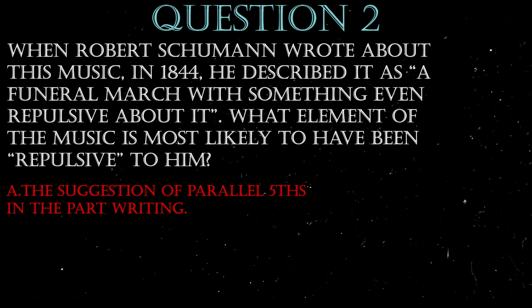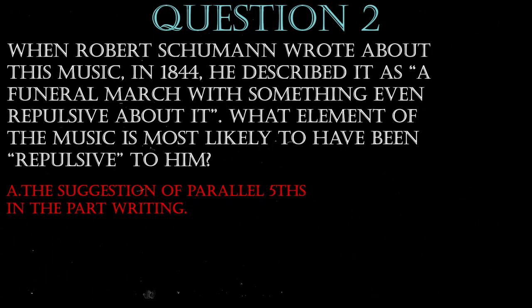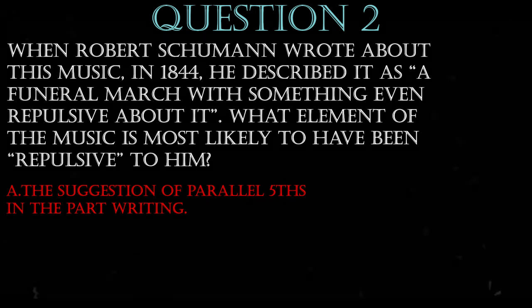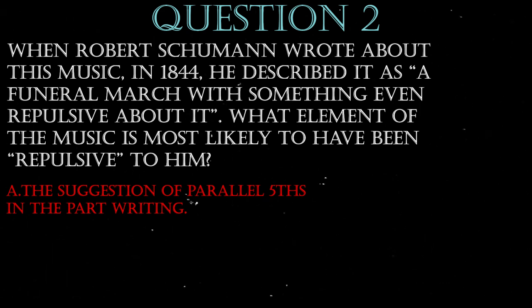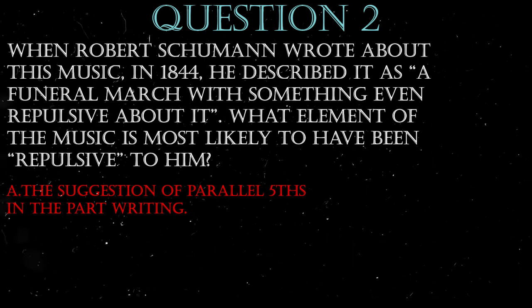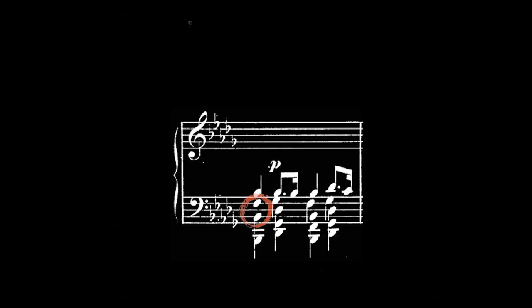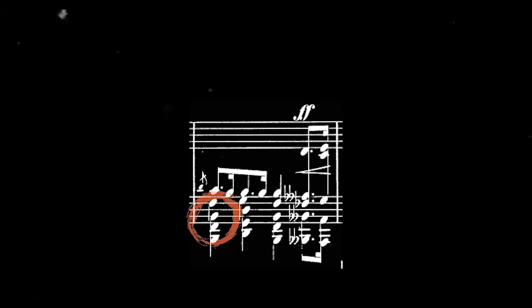The answer therefore is A. The element that Schumann found repulsive is probably the implied consecutive fifths in the harmony of each bar, just swinging back and forth. You can hear them as they move from B-flat five to G-flat first inversion, but there are these fifths moving around in the inner parts.